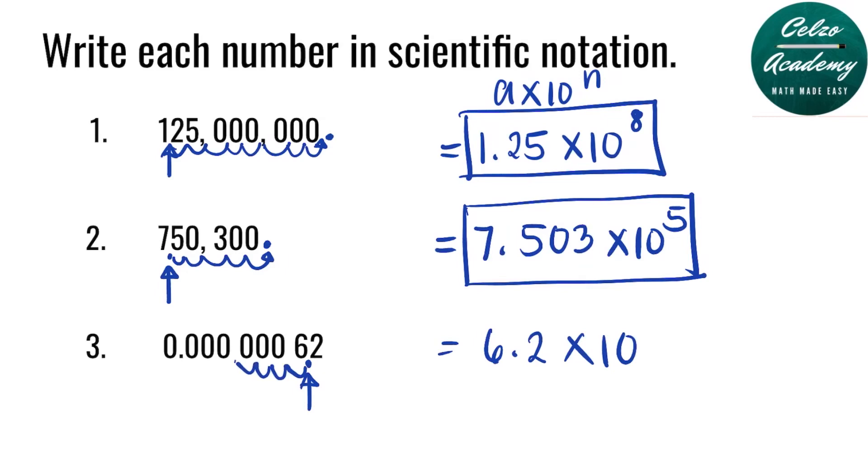We have 7 digits on the left. Since it's on the left, we will have a negative exponent. 6.2 times 10 to the negative 7.